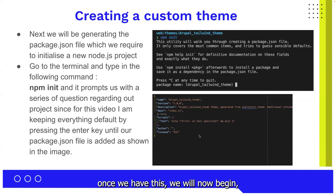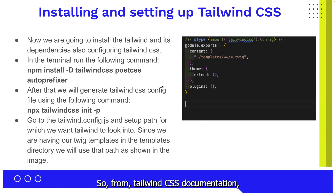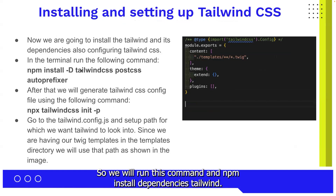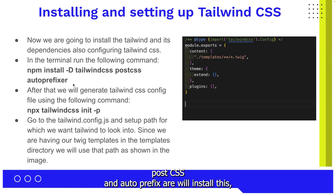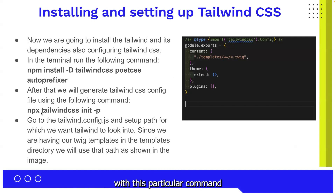Once we have this, we will now begin installing and setting up Tailwind CSS. From the Tailwind CSS documentation, we have a particular command to install Tailwind in our project. We'll run: npm install --dev tailwindcss postcss autoprefixer. Once it is done, we will generate a Tailwind config file with another command.